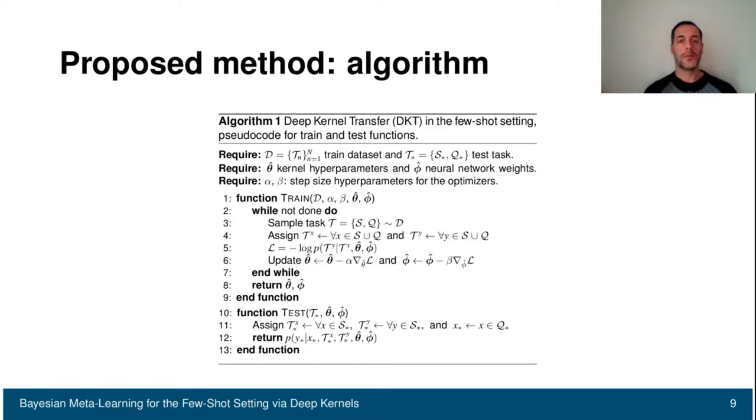This is a look over the algorithm. You can find both the training and test function. At training time, we have our training loop. Inside this loop, we are going to sample one task. Then we assign to tx and ty the input and target for that task. Line 5, you can see that we are estimating our log marginal likelihood. Line 6, we are updating the kernel parameter theta and the network weight phi. At the end of the training, we return the two sets of parameters.